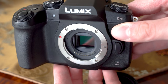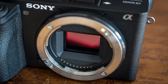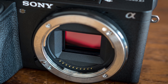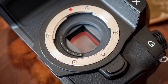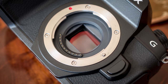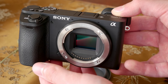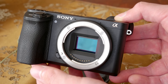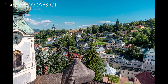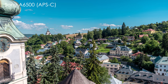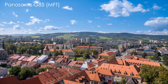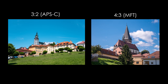Both APS-C and Micro Four Thirds are basically sensor sizes. APS-C is roughly 24 by 16 millimeters and Micro Four Thirds is about 18 by 14 millimeters. APS-C is about 30% bigger. Also worth mentioning is that APS-C aspect ratio is 3 by 2 and Micro Four Thirds aspect ratio is 4 by 3. Which aspect ratio is more suitable for you is basically a matter of preference or depends on your main sharing platform.